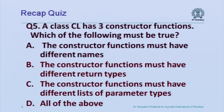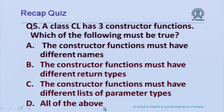Last quiz question: class CL has three constructor functions. Which must be true? The constructor functions must have different names; must have different return types; must have different lists of parameter types; or all of the above?